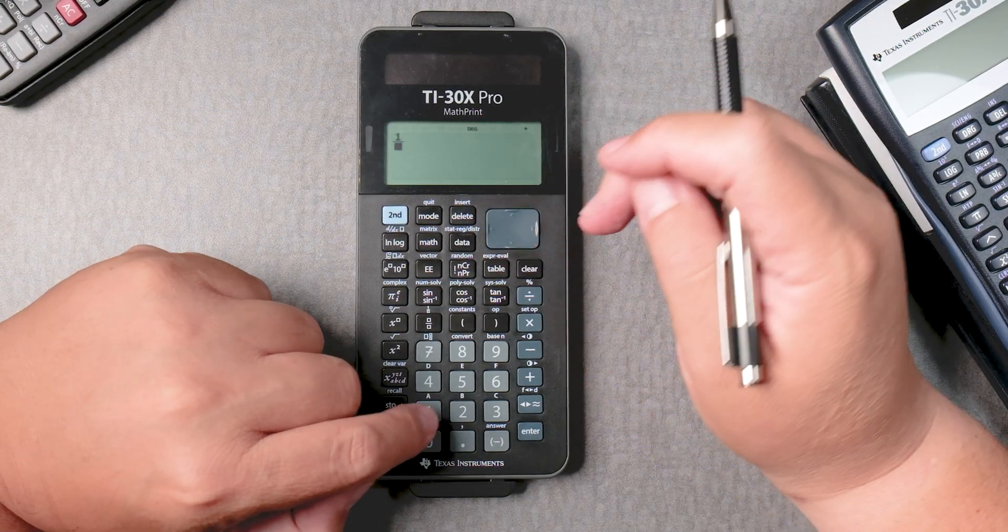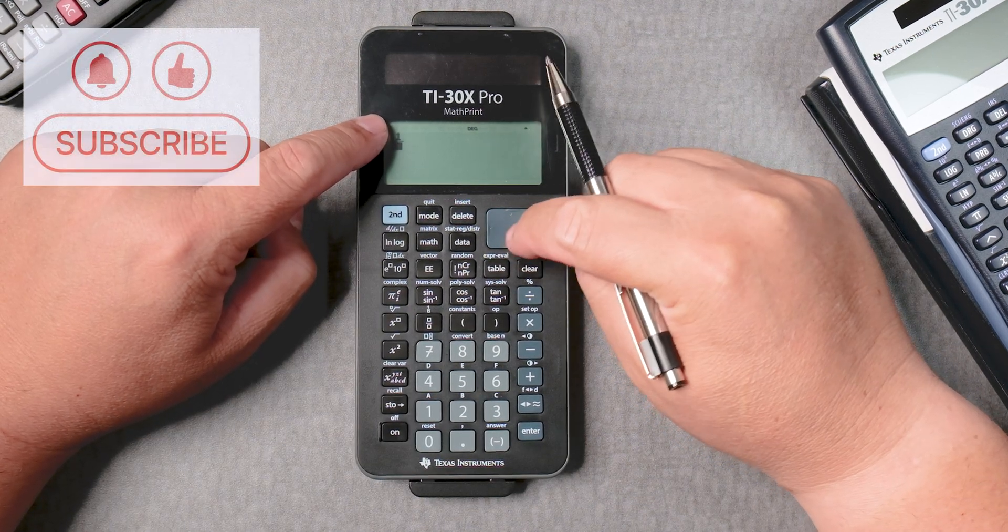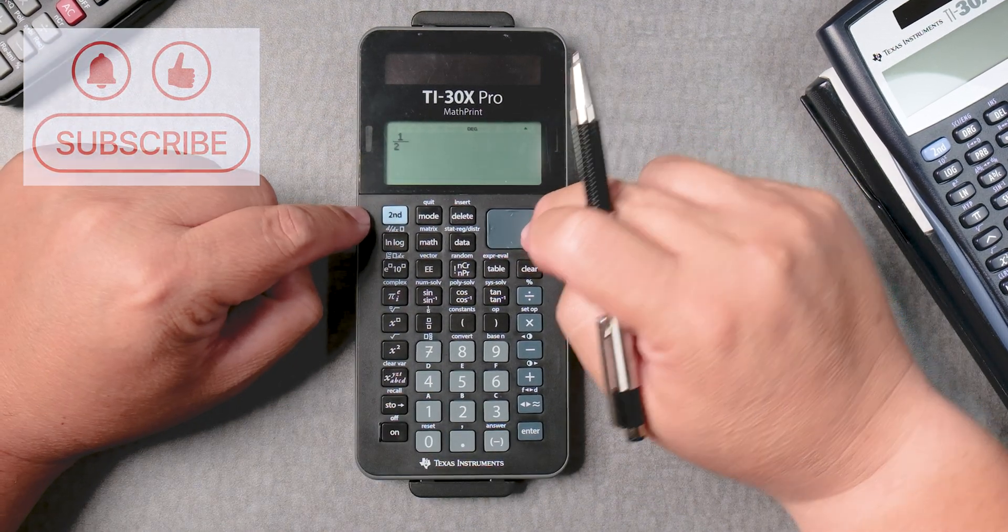Let's say one-half. Type the one. I use the D-pad, bring it down, two, move it over.